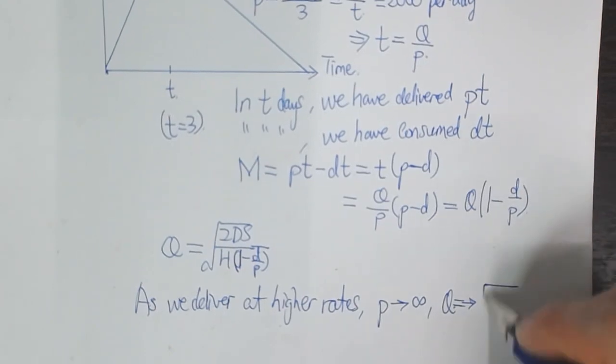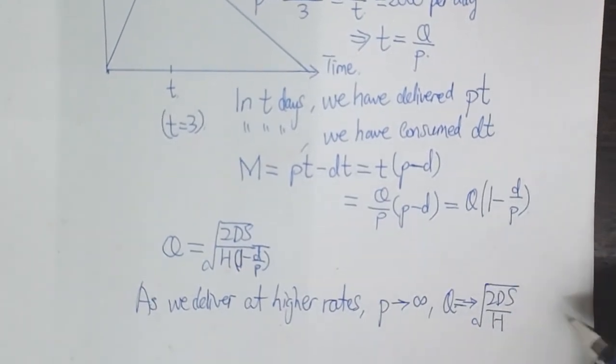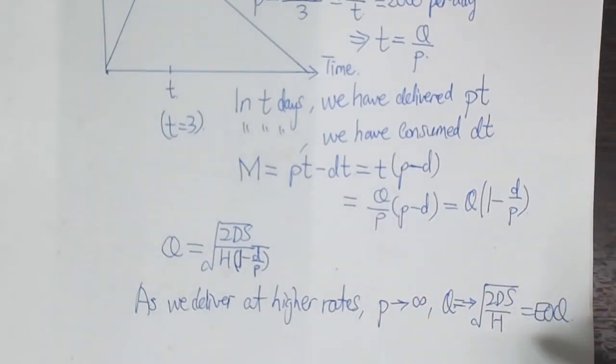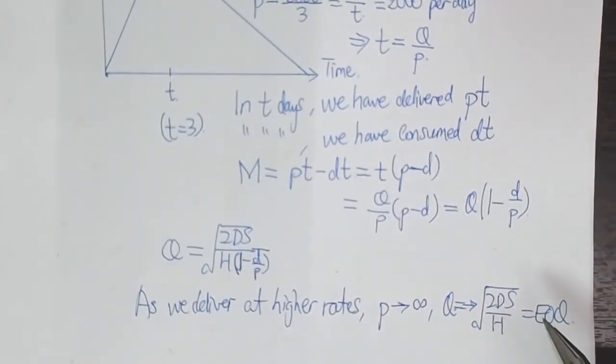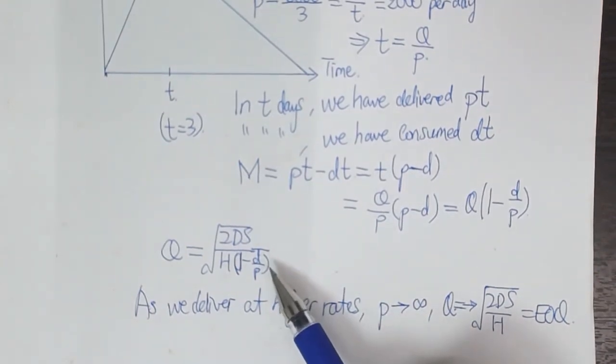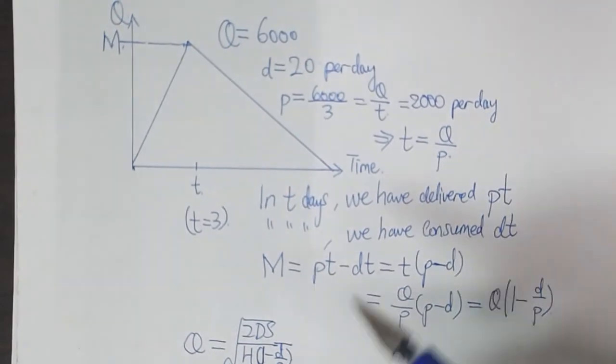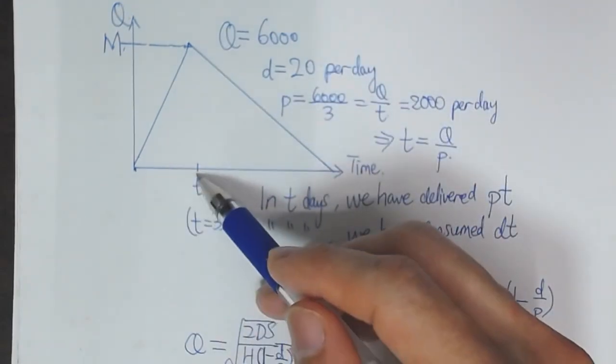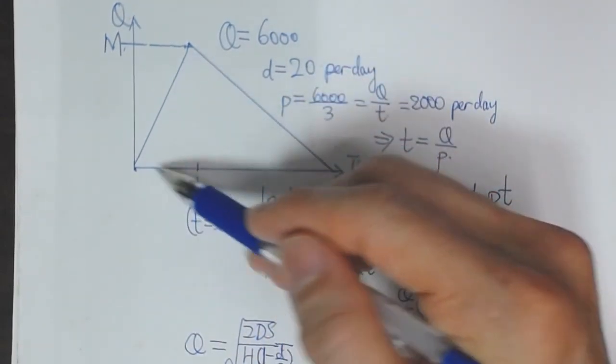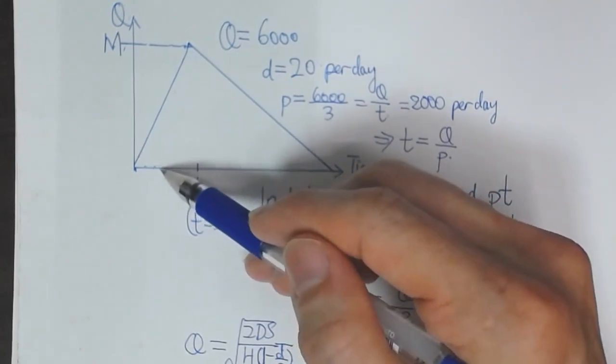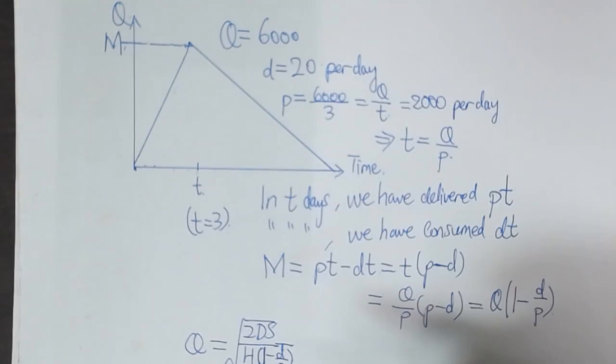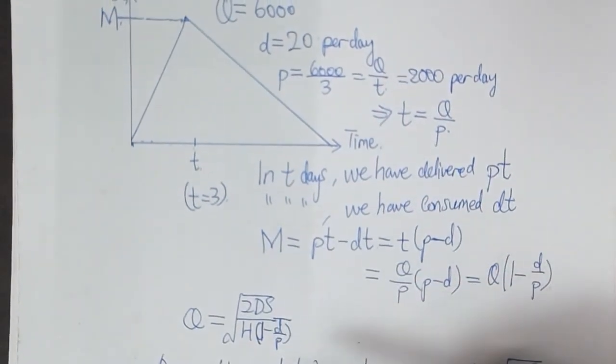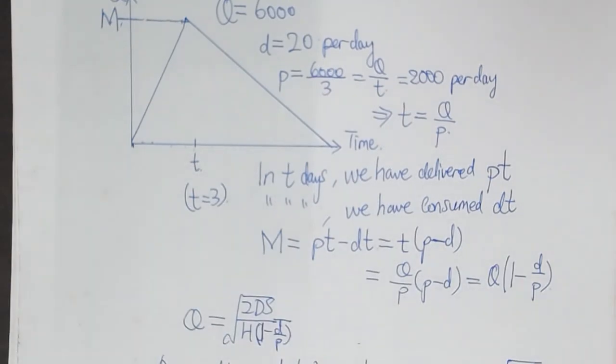In many senses, the batch production formula is an extension of the EOQ formula. It generalizes the EOQ formula so it doesn't have to be a right-angle triangle; it can be a slanted triangle by taking more time to deliver the same order quantity. While for each day we deliver, we're also consuming at the same time. It's a very nice extension that takes into account two activities—production and consumption—simultaneously, connecting with each other.